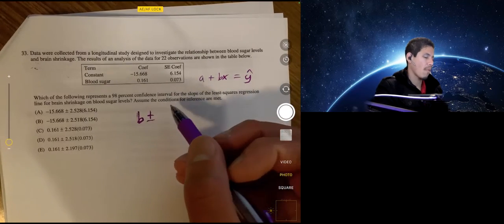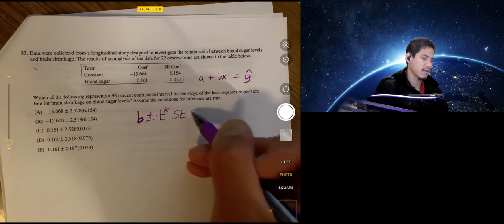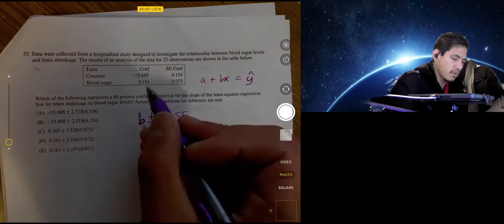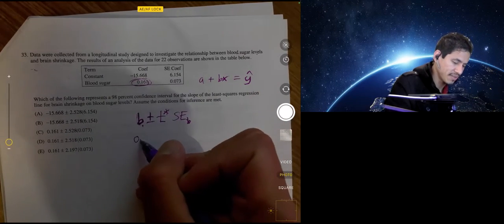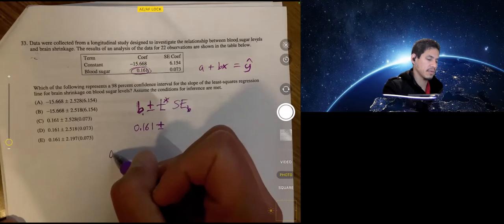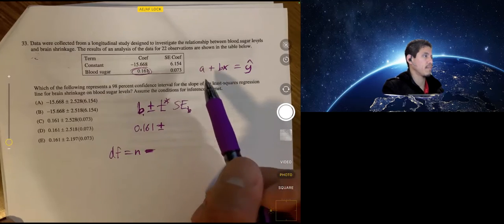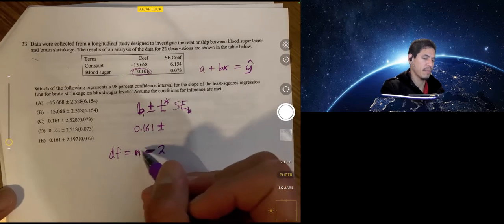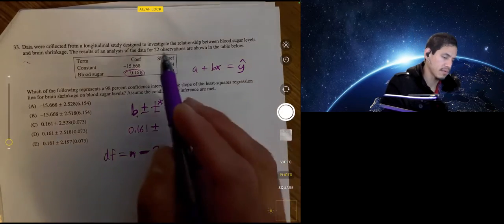Now, our point estimate plus or minus our critical value, our T star in this case, times the standard error of the slope. So our point estimate, our sample slope would be this 0.61. So we're trying to use blood sugar to predict brain shrinkage amount. So it'd be 0.161 plus or minus. Our T star, we have to figure that out by using our degrees of freedom. Our degrees of freedom for estimating population slope from sample slope data is going to be two less than our sample size. So make sure you remember that. So it's usually N minus one in a lot of cases, but in this case, it'll be N minus two. So we would have 22 minus two would be 20.